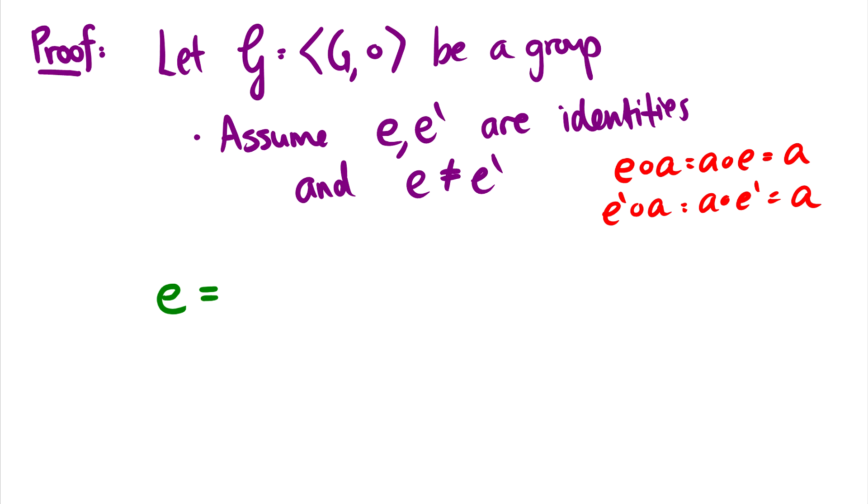Well, what is e? Well, if we take the identity element e′ and then use the operation with e, well, this is just equal to e, right? So this is the same because this e′ is an identity element. So it should map e back to itself.